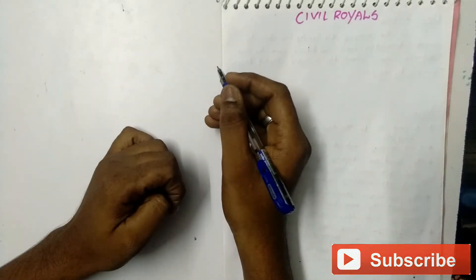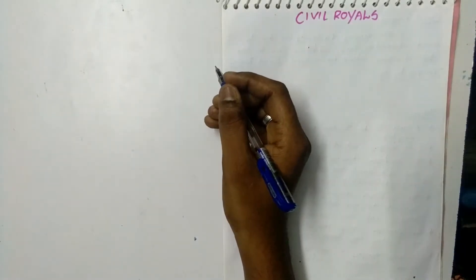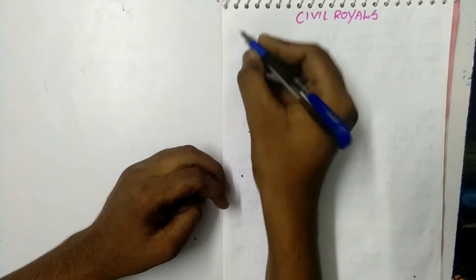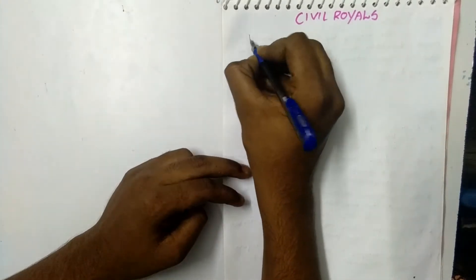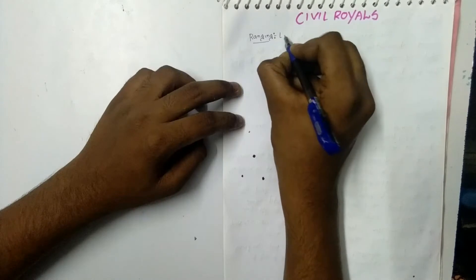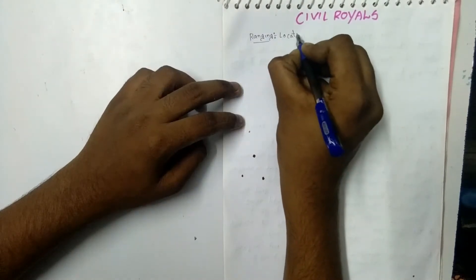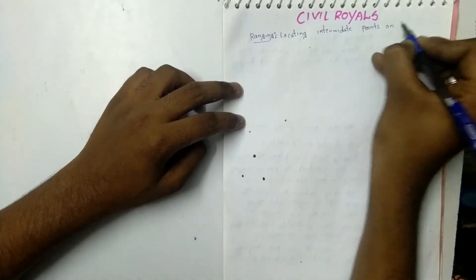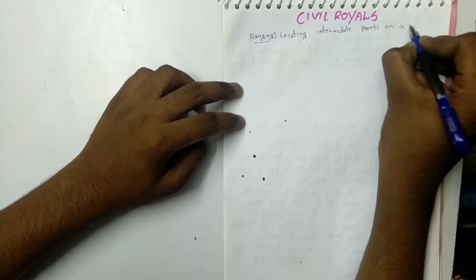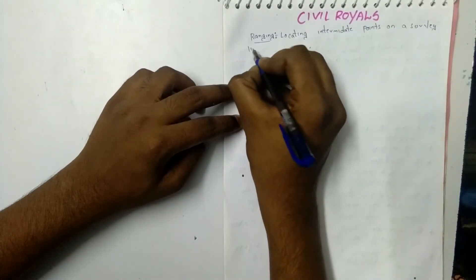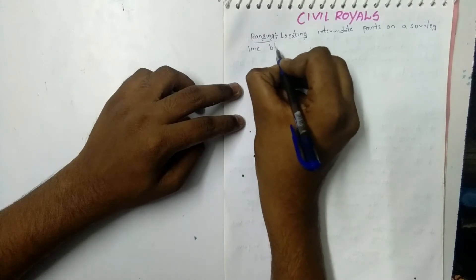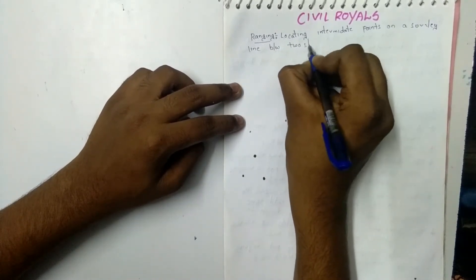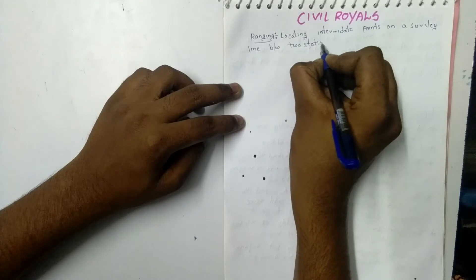Welcome back guys. I am going to talk about Ranging. Ranging is locating intermediate points on a survey line between two stations. This is called Ranging.